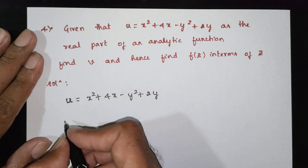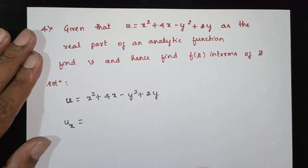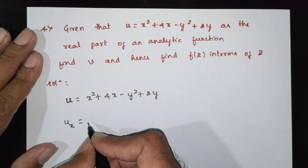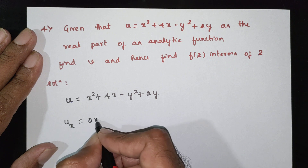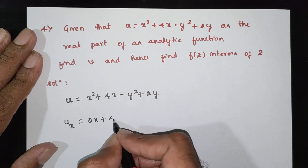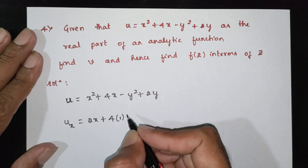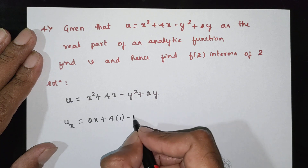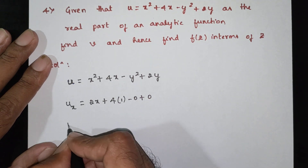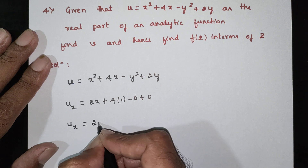First, find ux — the partial derivative with respect to x. x squared differentiates to 2x, 4x differentiates to 4, and the y terms give 0. So ux is equal to 2x plus 4.